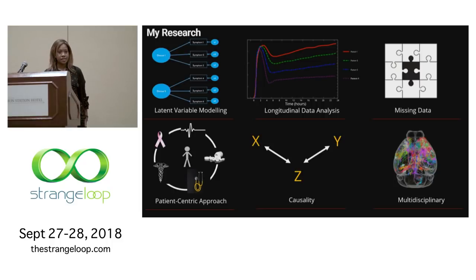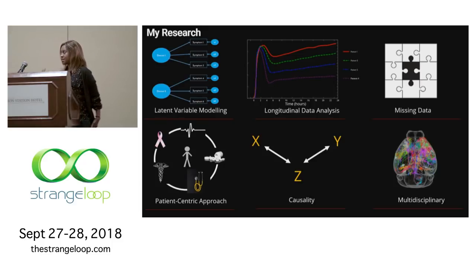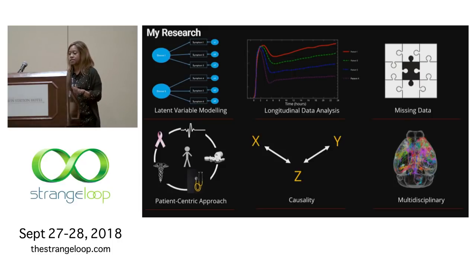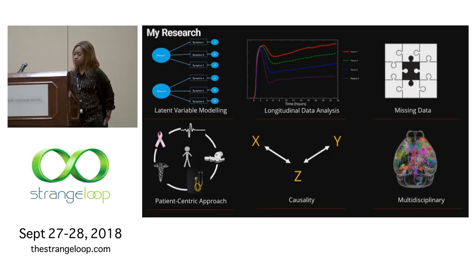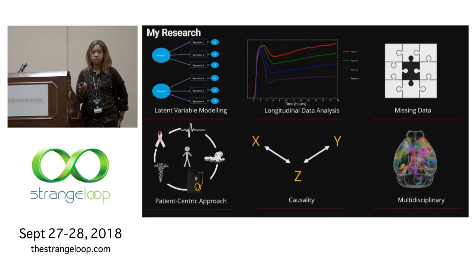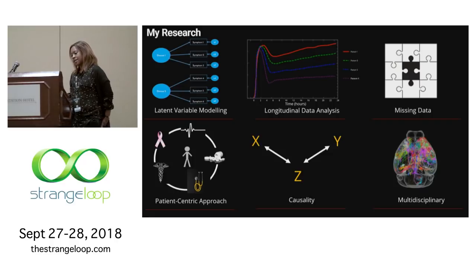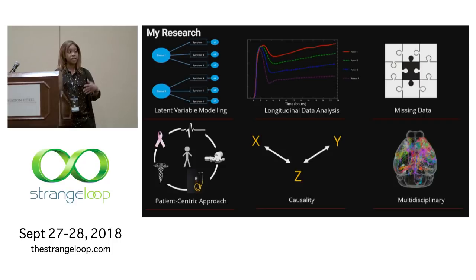I also look a lot at causality, which is very important in health. A lot of the work I do has two characteristics. One is that it's multidisciplinary — I work with social scientists, engineers, and clinicians to try to understand healthcare systems and health. The work is also very patient centric, and I think it's really important that the patient is at the centre of this research and what motivates it. Because sometimes we think about clinician empowerment, but here what we're thinking about is patient empowerment and how to help people take their health into their own hands.